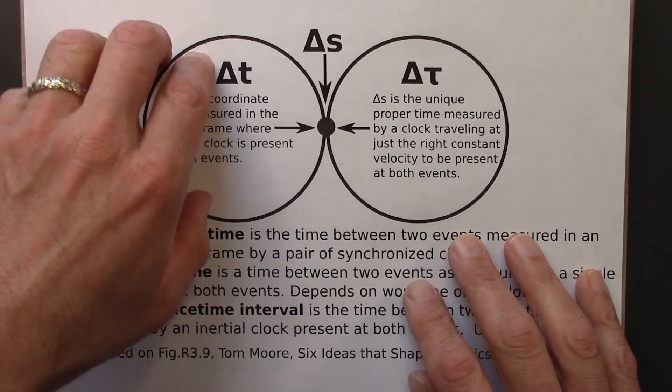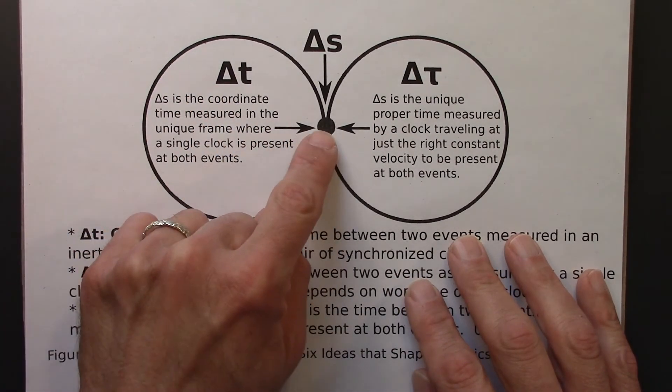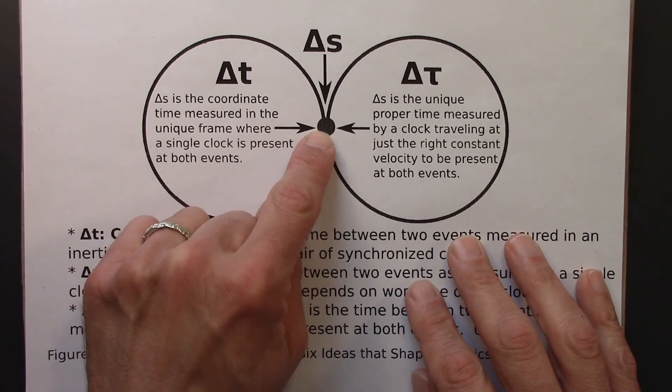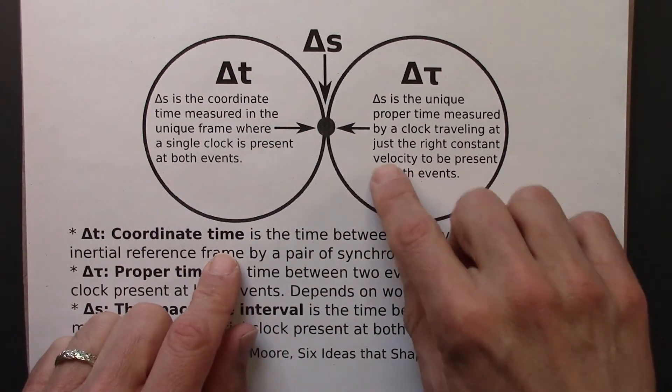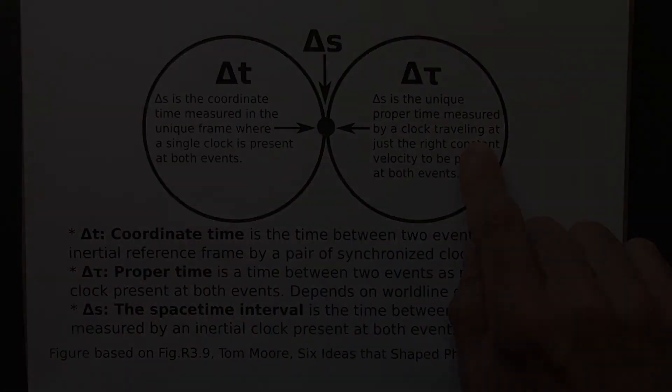So you have lots and lots of coordinate times, but there's only one reference frame in which the coordinate time coincides with the spacetime interval. And you have lots and lots of proper times, but there is only one world line, the straight-line world line, in which your proper time is also a spacetime interval.